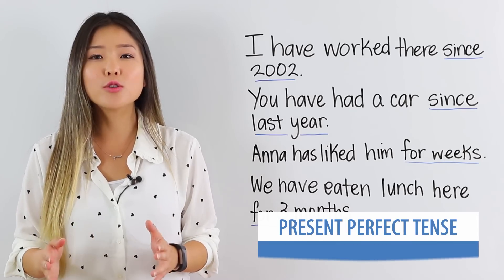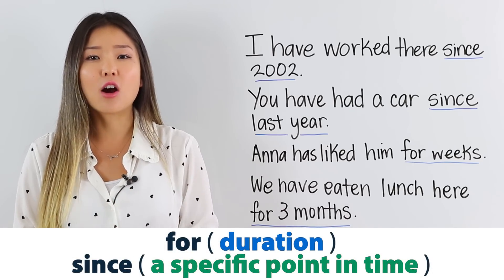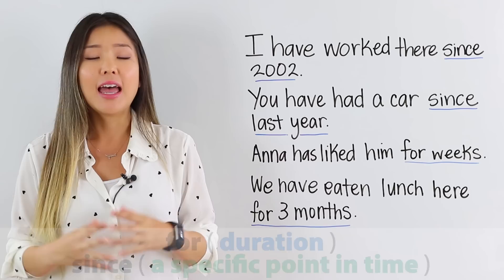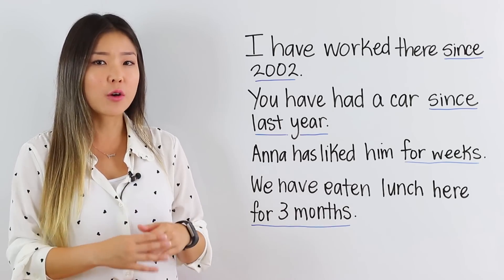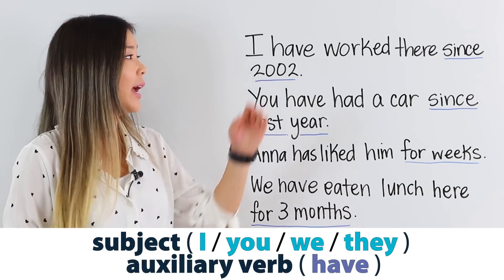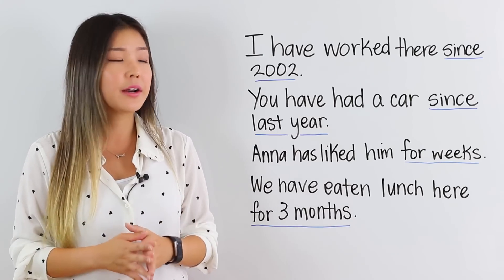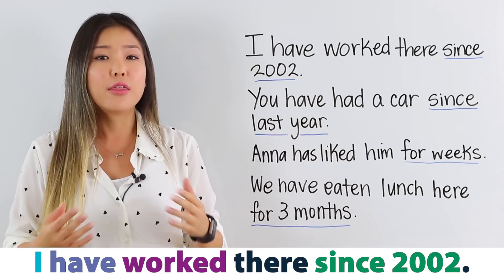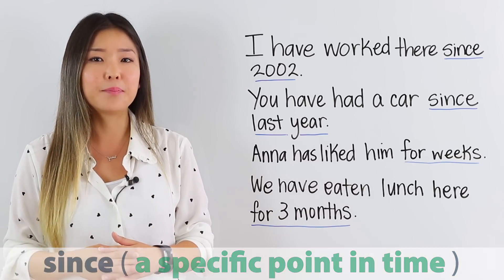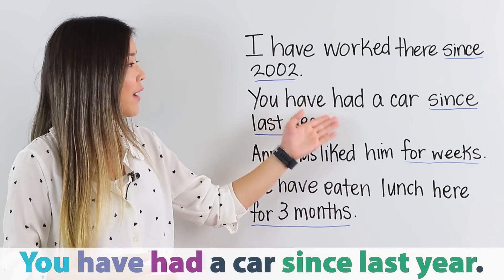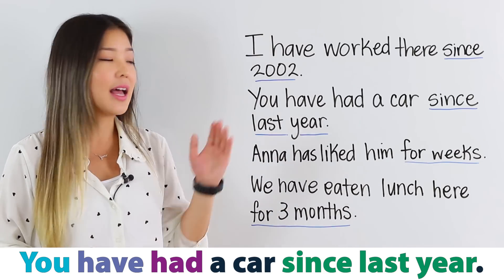The present perfect tense is also used to describe an action that started in the past and continues in the present. For and since are common expressions used with the present perfect tense. Let's take a look at these examples. I have worked there since 2002. You'll notice we start with the subject — if it's I, you, or we, we have have. Then the past participle of the verb, in this case worked. We also have since 2002, which shows when the action started. With the expression since, you need to use a specific point in time. The next example does the same thing: You have had a car since last year.